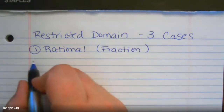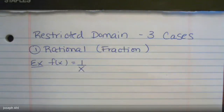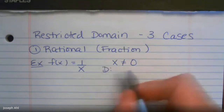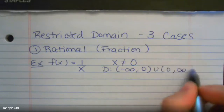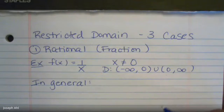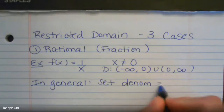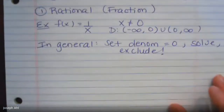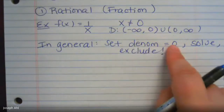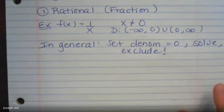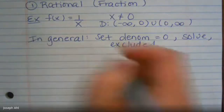The first case is a rational function — something in fractional form. For example, f(x) = 1/x has a variable in the denominator. We can plug in anything for x except zero, because that makes it undefined. The domain would be (-∞, 0) ∪ (0, ∞). In general: set the denominator equal to zero, solve, and exclude those values from the domain. If there's an x² term in the denominator you might get more than one answer.